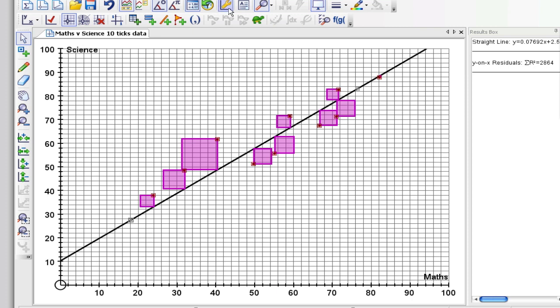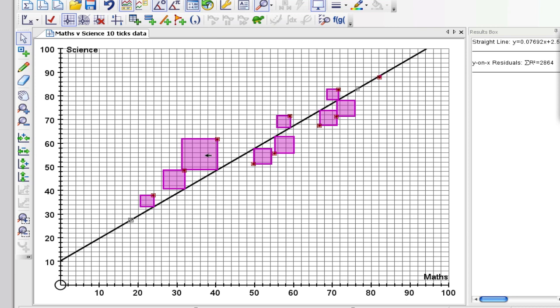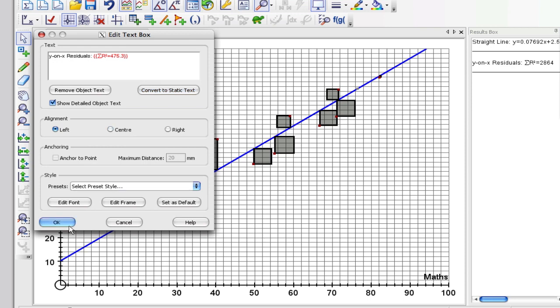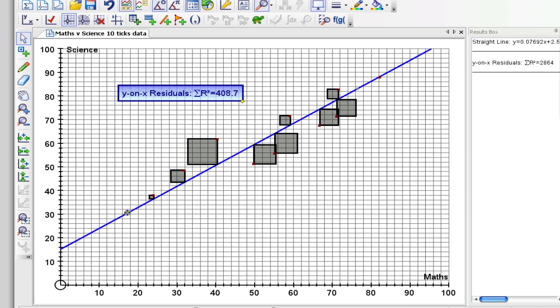And what I want to do is I want to try and find a line that minimizes the total area of these squares. So if I bring out a text box here we can see the residuals. So this is the sum of the residuals squared. In other words the total area of all these squares. And I want to pick a position so that this number is as small as possible.